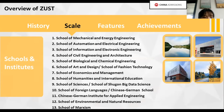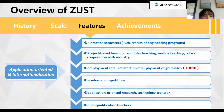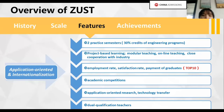We now have 14 schools in different kinds of specializations. Our university adopts an application-oriented teaching mode. If you take the engineering program, you will have two practice semesters, which accounts for 30% of the credits during your study here. Our teaching mode is a combination of modular teaching, online teaching, and close cooperation with different industries. As a result, our university ranks top 10 in terms of employment rate, satisfactory rate, and payment of graduates.